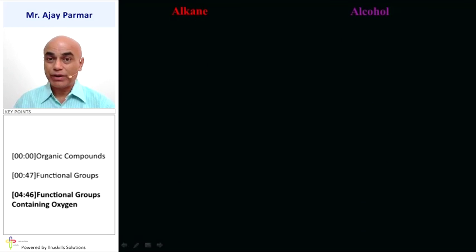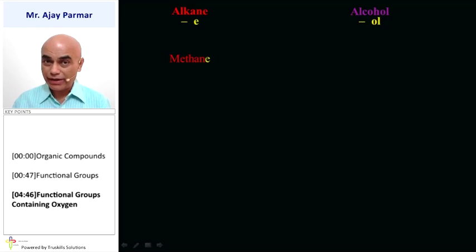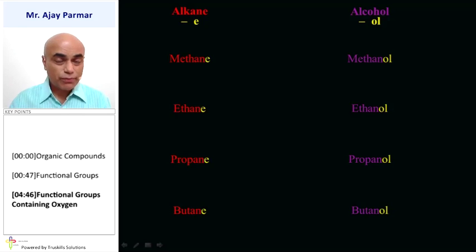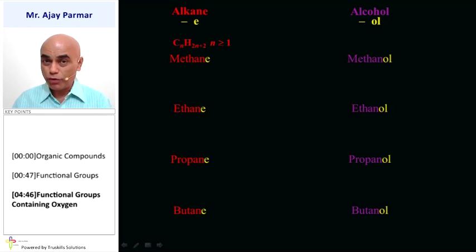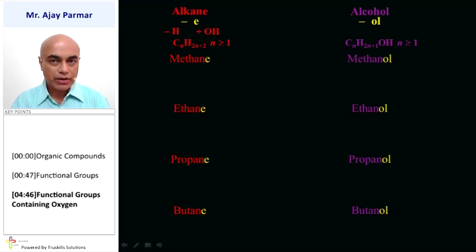Now let us remember the names of alcohols with respect to alkane. Here the suffix E is replaced by OL. For example, methane becomes methanol, ethane becomes ethanol, propane becomes propanol, butane becomes butanol, and pentane becomes pentanol. The general formula of alkane is CnH2n+2 where N is greater than or equal to 1. To form an alcohol, we get rid of one H and in its place substitute OH. Therefore the general formula of alcohol becomes CnH2n+1OH, where N is greater than or equal to 1.